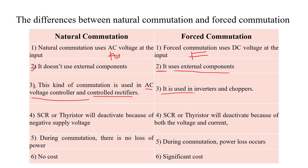An inverter is a DC-to-AC converter and a chopper is a DC-to-DC converter — in both cases DC voltage is given at the input side, so both require force commutation. Fourth point: in natural commutation, the thyristor deactivates because of negative supply voltage — whenever reverse bias voltage appears across the SCR, the device turns off naturally. In force commutation, the SCR or thyristor deactivates because of both voltage and current.